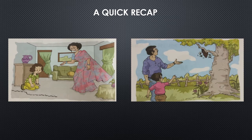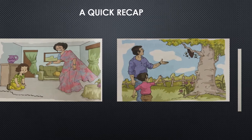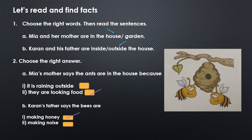Please write down all the question and answers. Let's read and find facts. First: choose the right word. Sentence one — Mia and her mother are in the house or garden? They were in the house, so put a tick mark on 'house.' Sentence two — Karan and his father are inside or outside the house? They are outside the house, so put a tick mark on 'outside.'